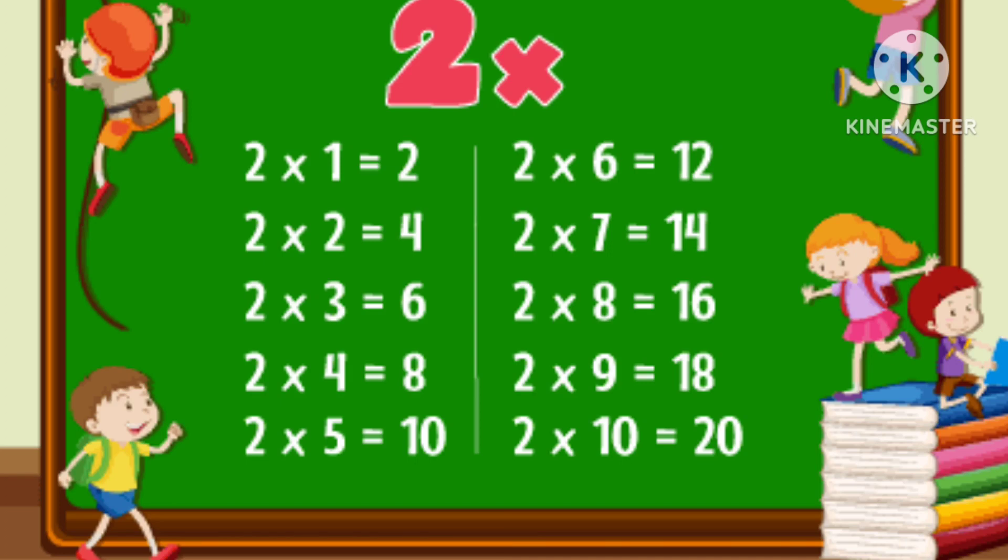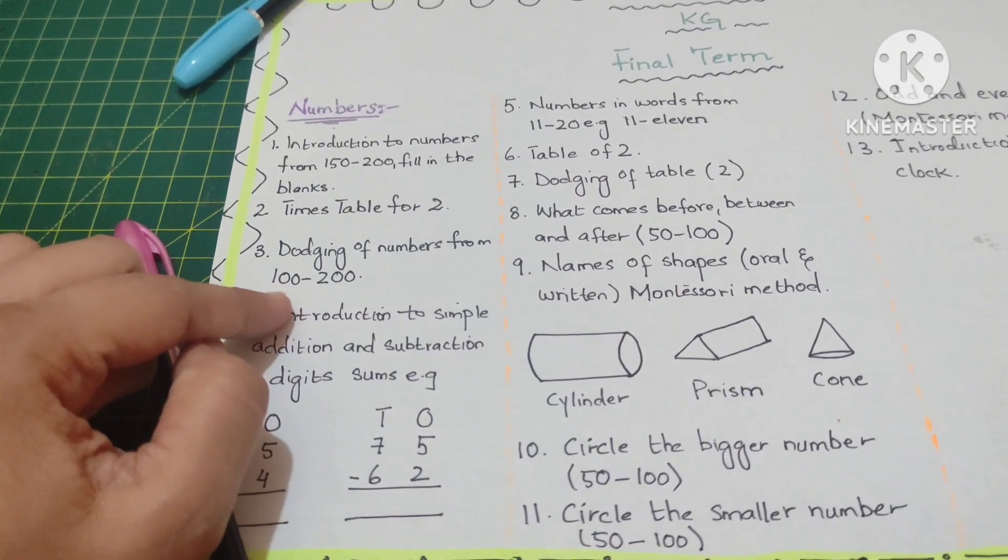The next one is the times table for two. Two times table will be done with the children. Dodging of numbers from 100 to 200.